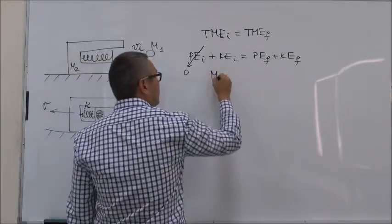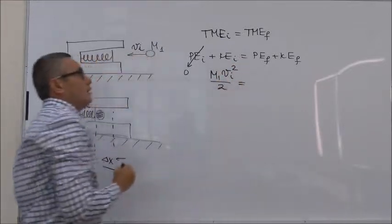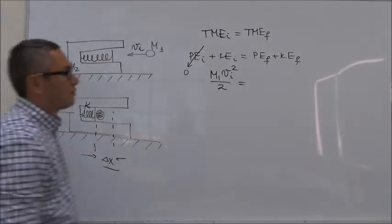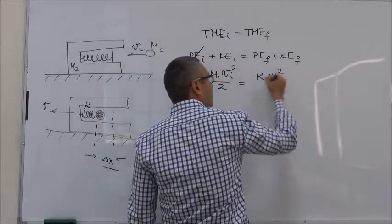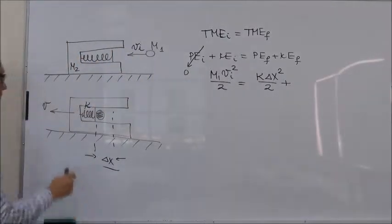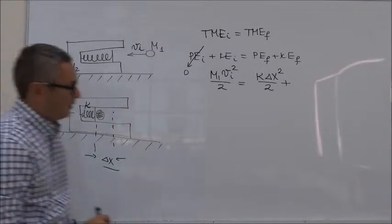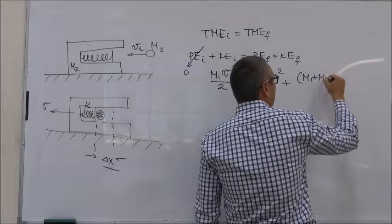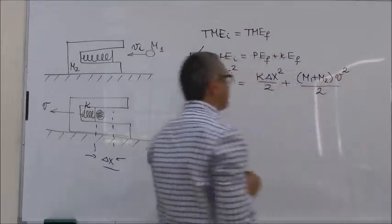So that is equal to M1 V initial squared over 2. Potential energy final is the potential energy of the spring when it is compressed to the maximum compression. So we can say K delta X squared over 2. Kinetic energy is the kinetic energy of the barrel and the ball. So the total mass is M1 plus M2, velocity is V, so V squared over 2.